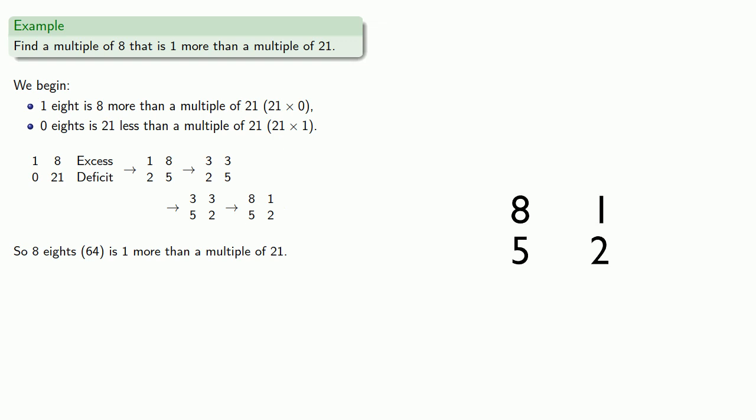Now while we have answered the actual question, let's go ahead and finish out the process. So 2 minus 1, multiply and add. And that tells us that 13 eights, 104, is 1 less than a multiple of 21.